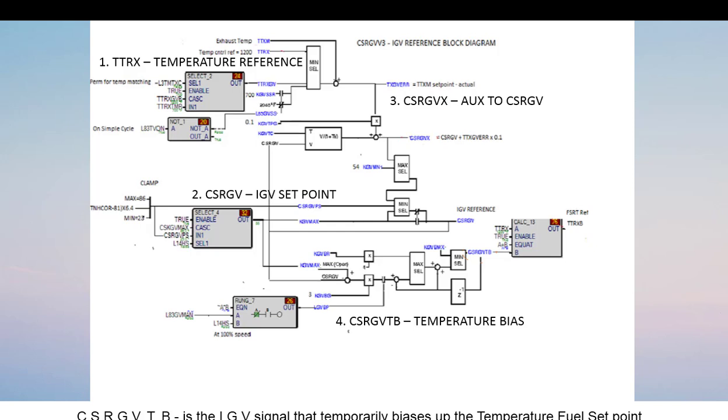CSRGVTB is the IGV signal that temporarily biases up the temperature fuel set point. It is produced by this group of blocks.